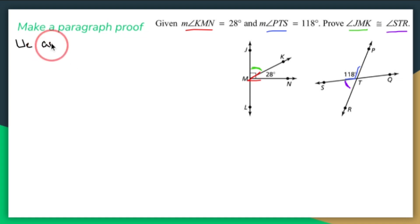So we are given that the measure of angle KMN is 28 degrees and the measure of angle PTS is 118 degrees, period, end of sentence.